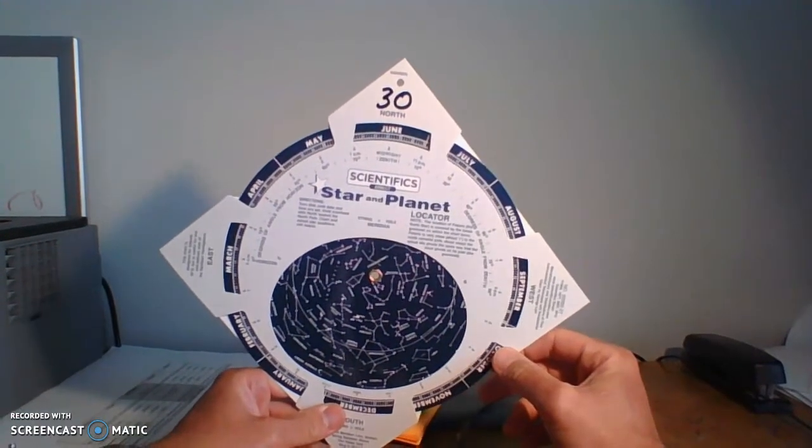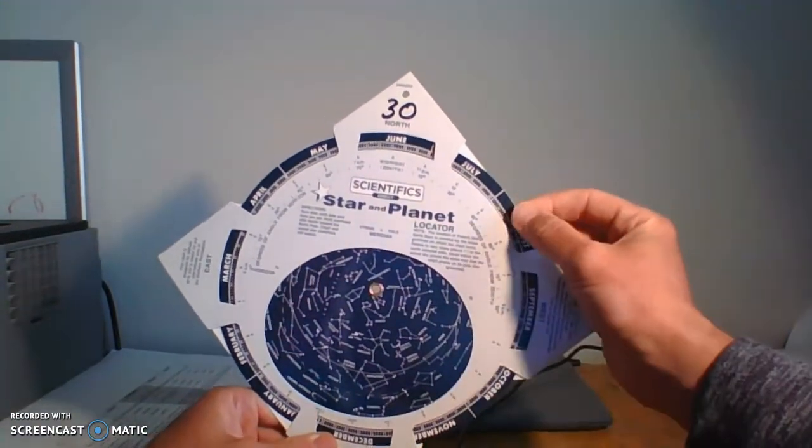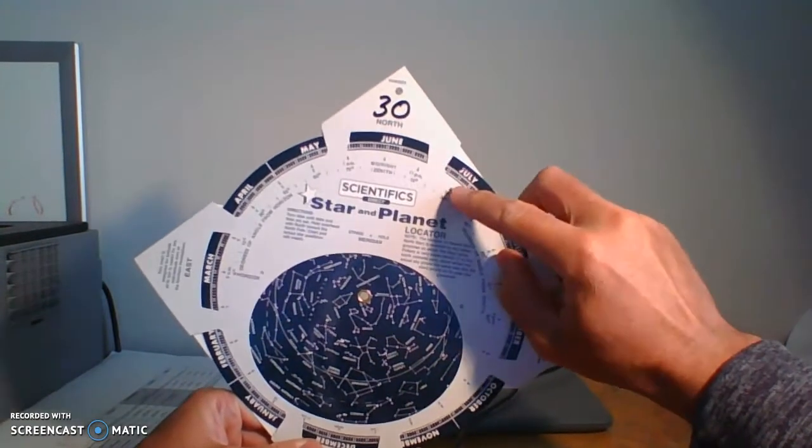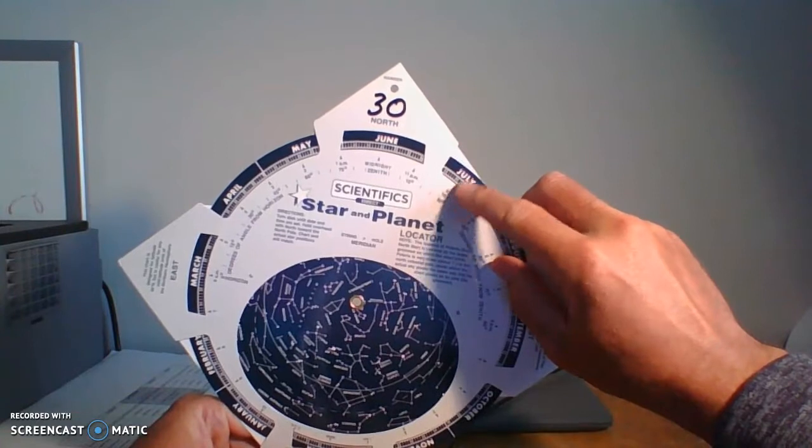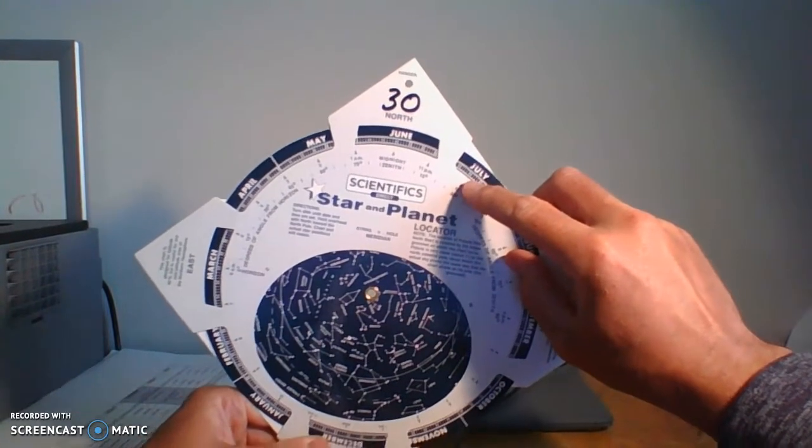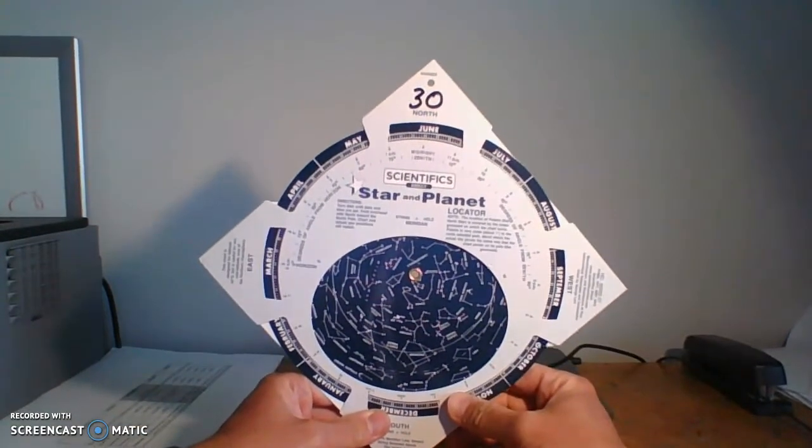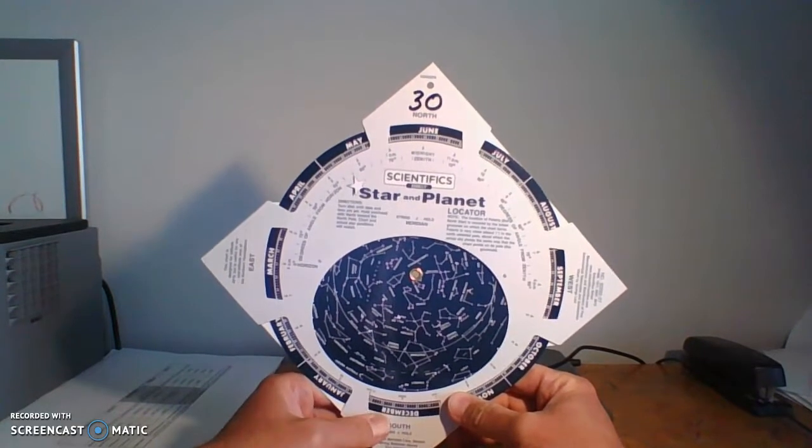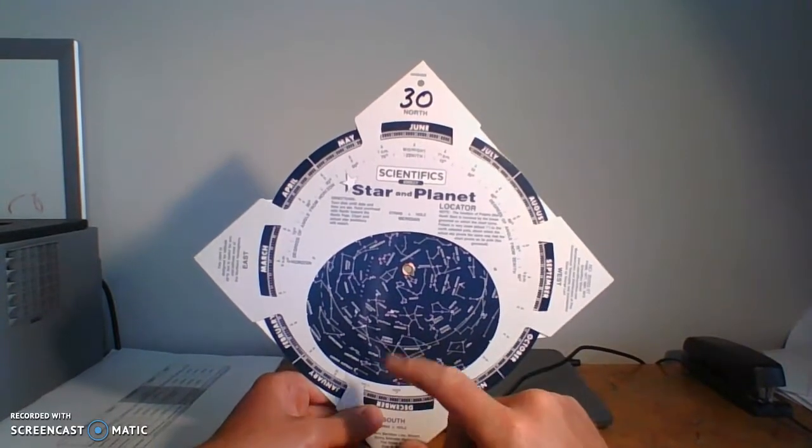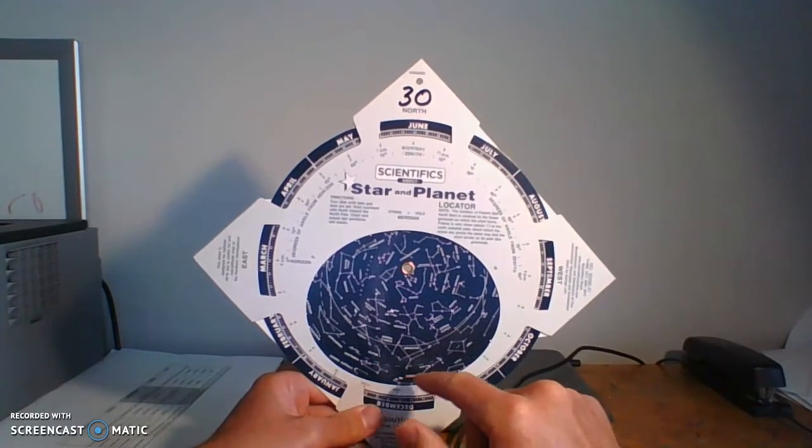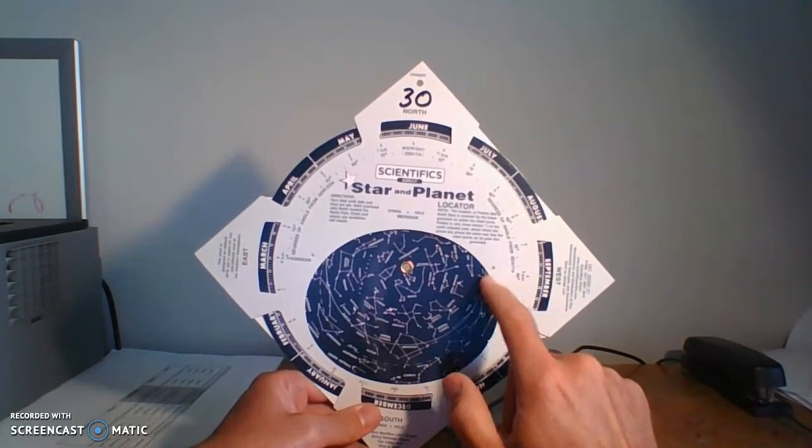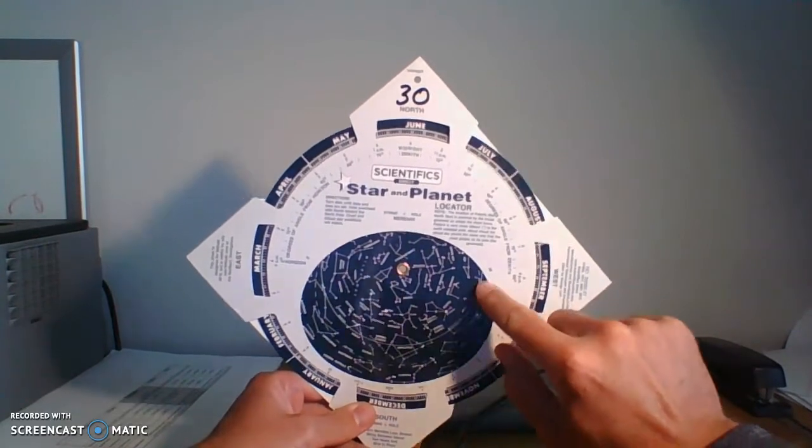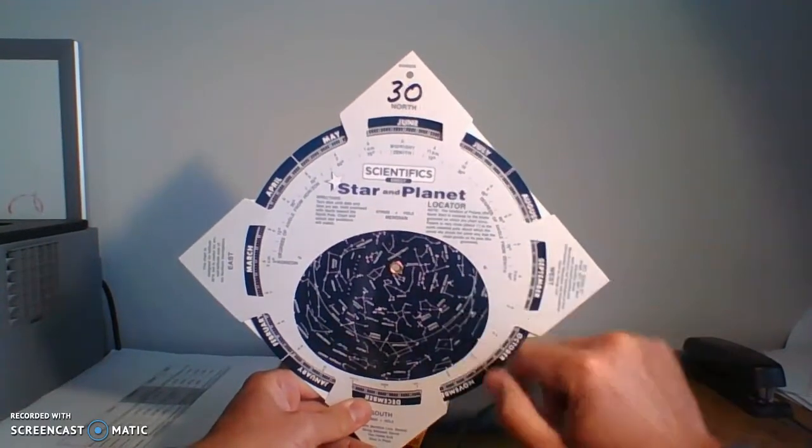So let's say that we want to find something on July 15th at 10 p.m. This is what the night sky is going to look like. And so at 10 p.m., right on the western horizon is the constellation Virgo. So there's Virgo on the western horizon.